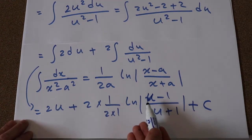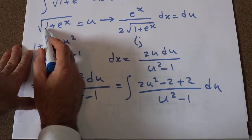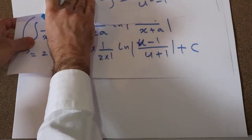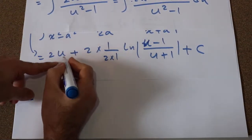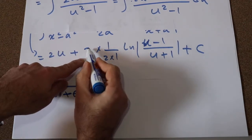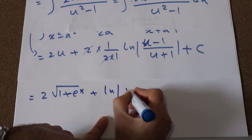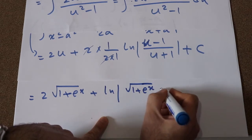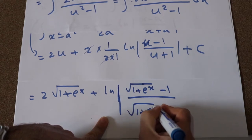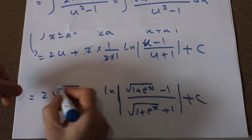Now all you need to do is substitute the parameter u back with its definition, which was √(1 + eˣ). Therefore, the solution to this integral is 2√(1 + eˣ) plus ln|√(1 + eˣ) minus 1 divided by √(1 + eˣ) plus 1|, plus C, which is the constant of integration. And that is the solution to our integral.